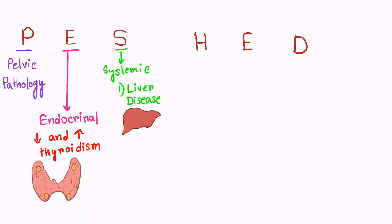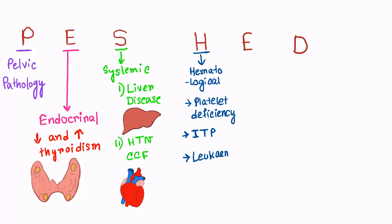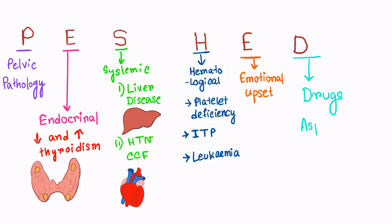S is for systemic causes like liver dysfunction, hypertension, and congestive cardiac failure. H is for hematological problems like bleeding disorders, platelet deficiency, idiopathic thrombocytopenic purpura, and leukemia. E is for emotional upset, and D stands for drugs like aspirin and anticoagulants.